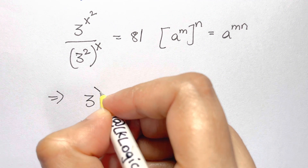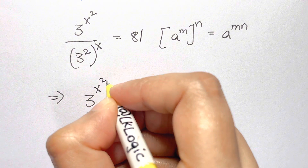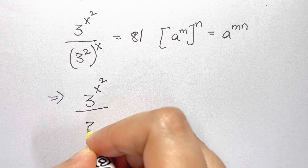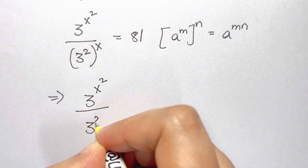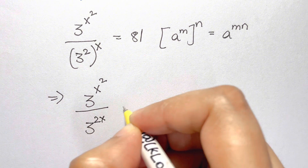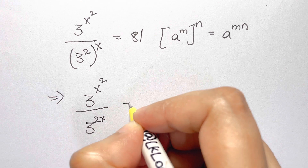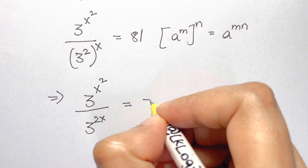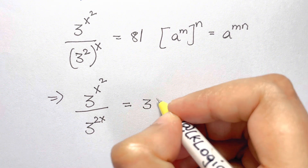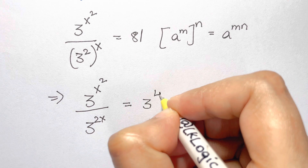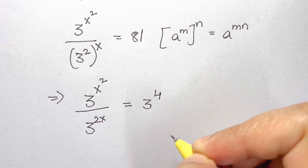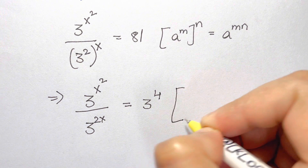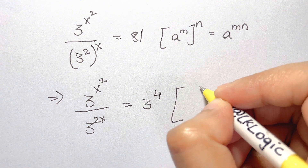In this step we have 3^(x²) over 3 to the power of 2x, which is equal to 81. And 81 can be written as 3 to the power of 4.